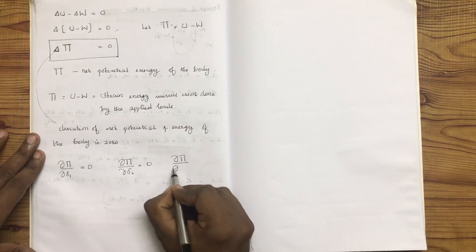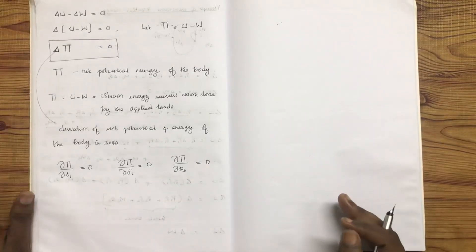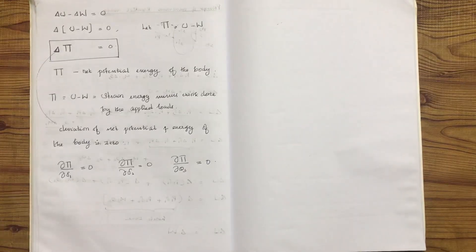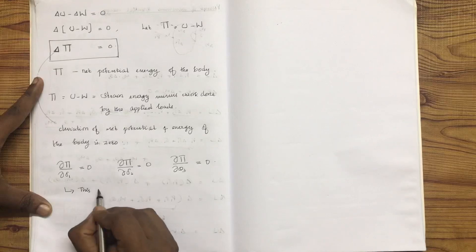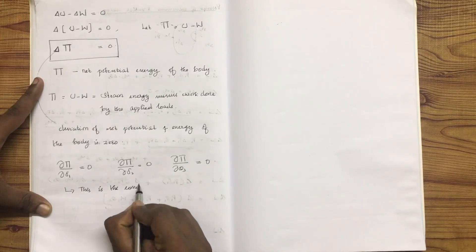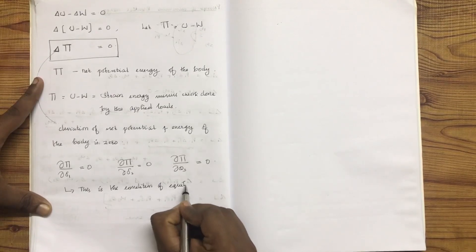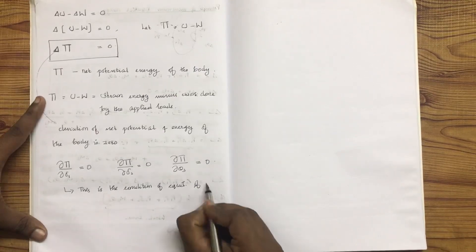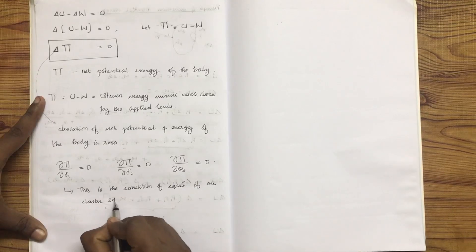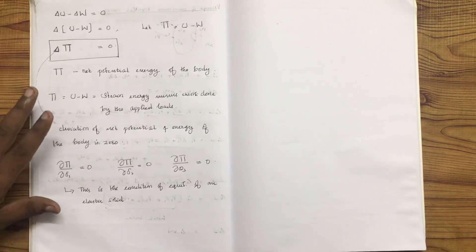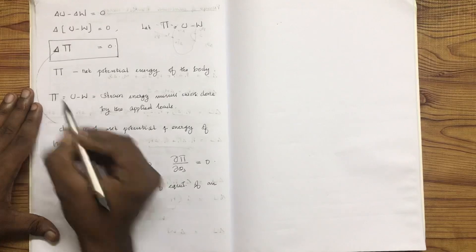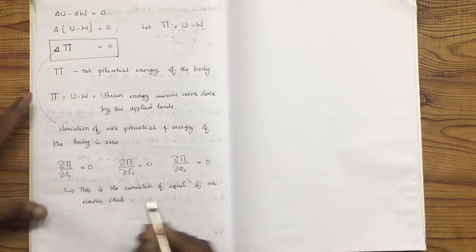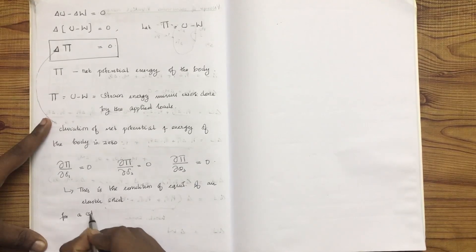The derivative of π with respect to the angular deflection is θ3. This is the condition of equilibrium of elastic solids.